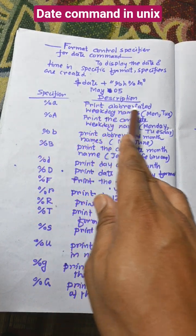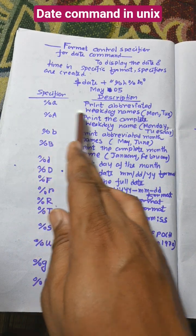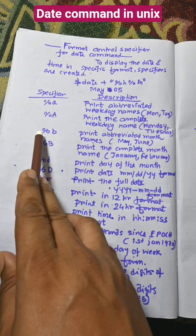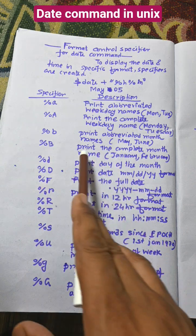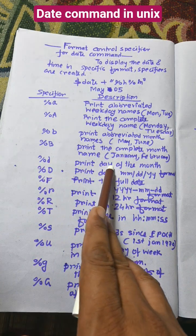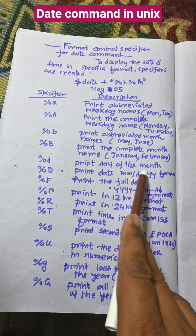%a prints the abbreviated weekday like Monday, Tuesday. %A prints the complete weekday name. %b prints abbreviated month name like May, June. %B prints the complete month name like January, February. %d prints the day of the month. %D prints the day in mm/dd/yy format.